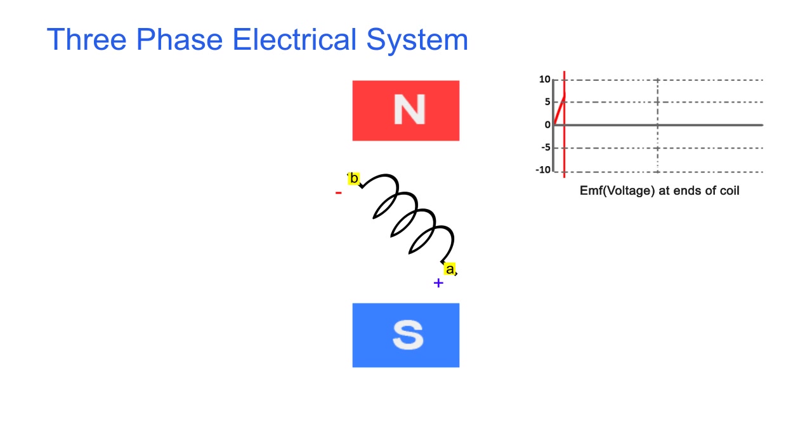As a result, an EMF starts appearing in the coil. The terminal A becomes positive and B becomes negative, meaning A is at higher potential and B is at lower potential. In this position, the coil aligns itself with the field and the EMF across the ends of the coil is maximum.